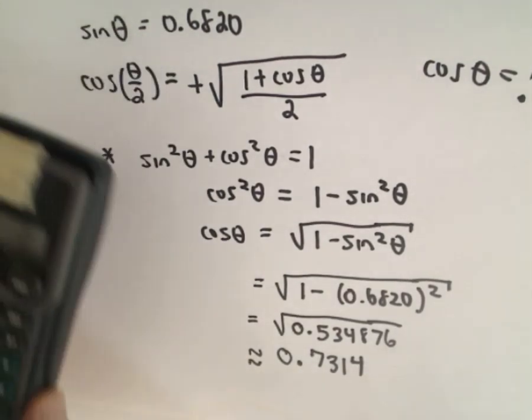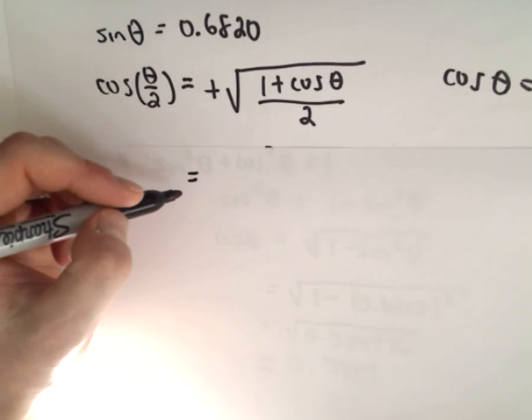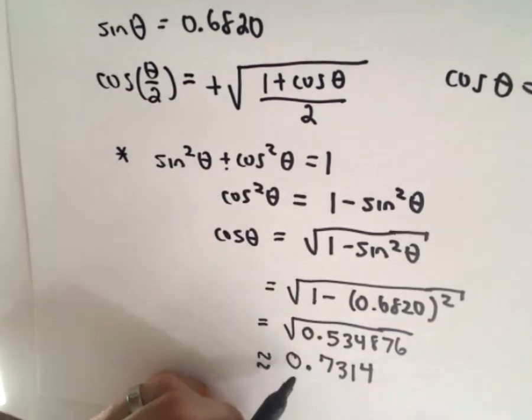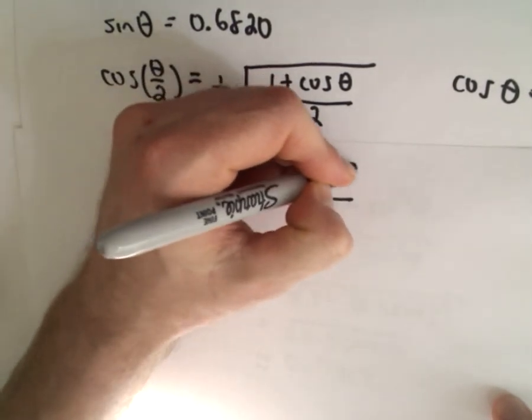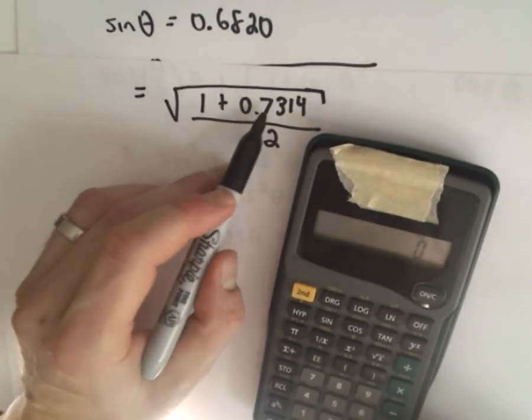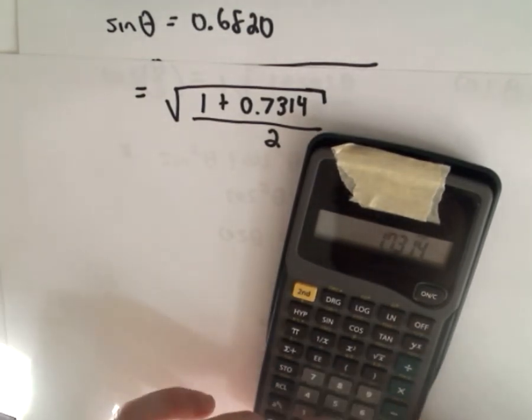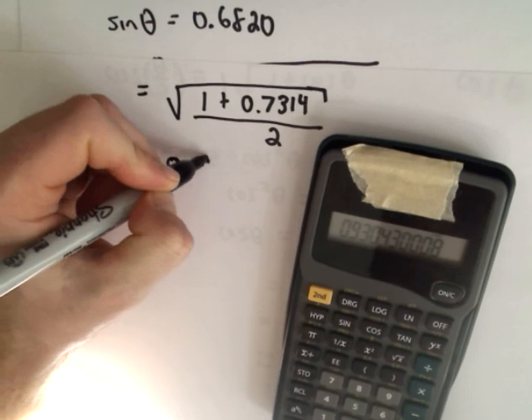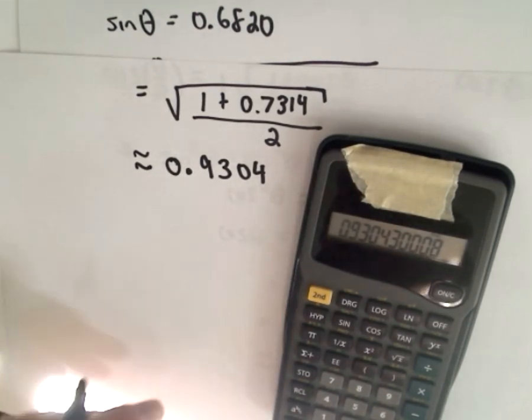Okay, so now it's just a matter of substituting in. So we said cosine of theta is going to be square root of one plus cosine of theta. We just said that's roughly 0.7314, that's all divided by two. So again, now I'm just going to use my calculator again. So 0.7314 plus one, that's just going to be 1.7314. I've got to divide that by two, and now I'm going to take the square root of that. And again, rounding to four decimal places, I get 0.9304 as my solution.